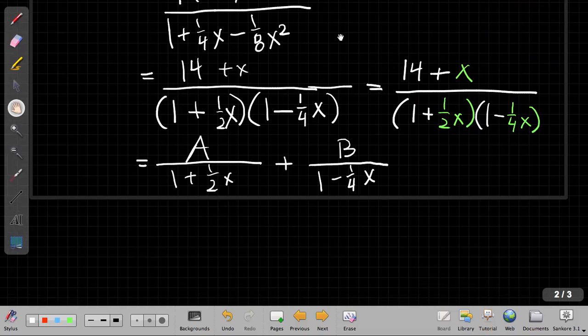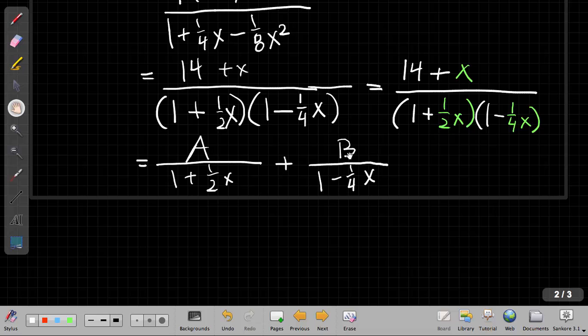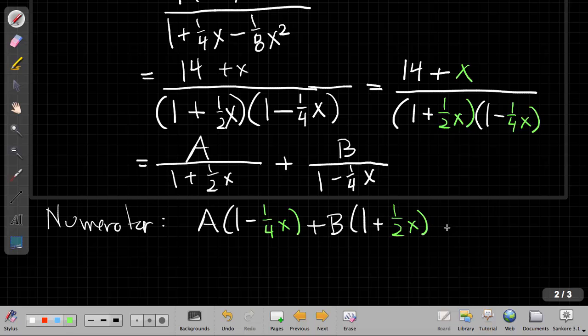And so now I say, well, my denominator, if I multiply this through, would give me this. The numerator would be A times this denominator plus B times that denominator. So I'm solving the numerator. I'd have A times (1 - ¼x) plus B times (1 + ½x). And all this has to be equal to the numerator I ended up with, which is 14 + x. And the color here is emphasizing, although this looks like one equation, it's really two equations put together here.